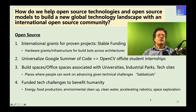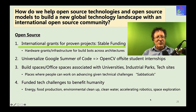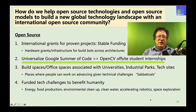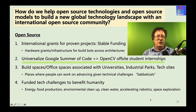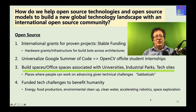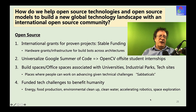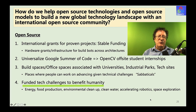How do we help open source technologies build a global international community? First, provide stable funding — international grants so projects can run internationally, which is what we're trying to do in OpenCV. Google Summer of Code has an off-site internship model that could be expanded — as long as there's funding, it could become an open source Summer of Code. Governments and communities can build office spaces associated with universities or labs where people can take breaks and work on projects — their own or sponsored sabbaticals. And we can create funded challenges to benefit humanity: energy, food production, environmental cleanup, clean water, accelerating robotics or space exploration — funding the open source community to develop technologies to address these challenges.